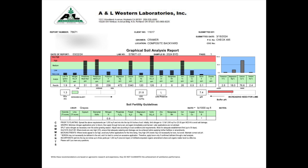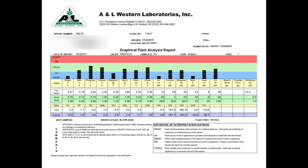As you recall, with the soil analysis earlier this year, my soils were deficient in nitrogen, potassium, zinc, manganese, copper, and boron. The sodium and chloride concentrations in the soil are low, which is good because I don't want any salinity problems. Like last year, the petiole analysis has confirmed some of these results, but some of the soil deficiencies did not show up in the petioles, as happened last year.